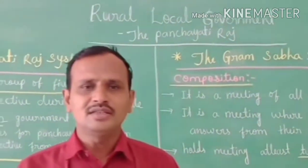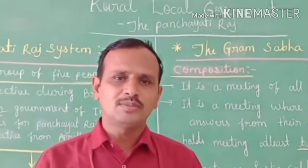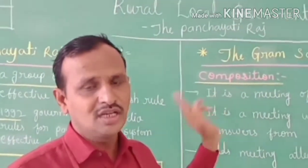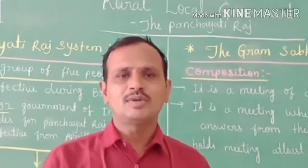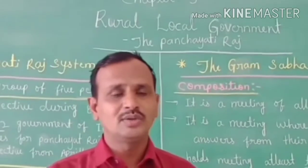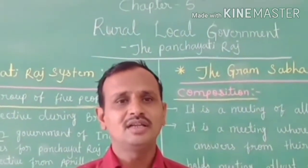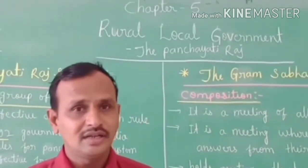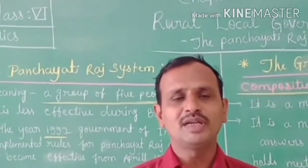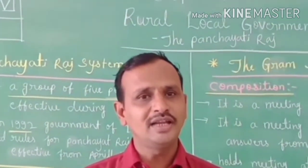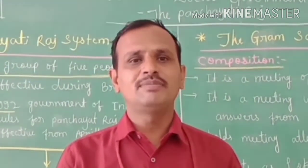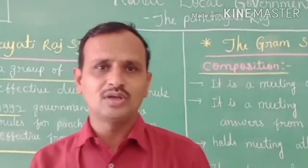Children, I think you all know a little bit about local government, because today's lesson is related to Rural Local Government. We have discussed this in our previous class during the lesson on Government. We discussed the levels of government — how many levels there are. There are three levels: Central Government, State Government, and Local Government. We also discussed a little bit about what local government is.